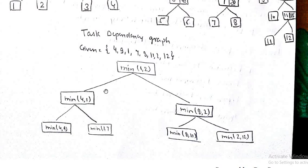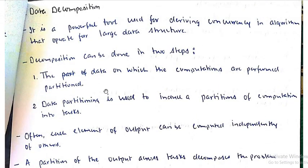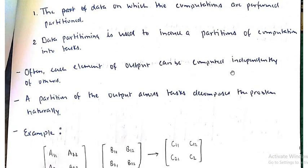Data decomposition is a powerful tool used for deriving concurrency in algorithms that operate on large data structures. Decompositions are in two stages: in the first stage we perform data partitioning, and in the second stage we partition the computation into tasks based on the partitioned data.